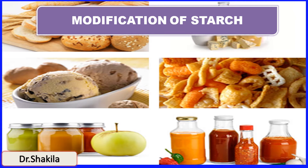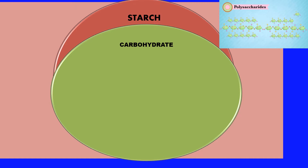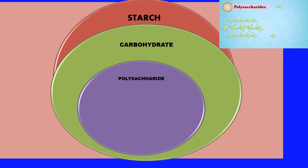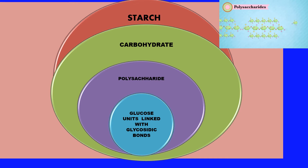Modification of starch is an interesting topic with varied applications in the food industry. Starch is a macromolecule belonging to the group of carbohydrates, which is a macronutrient and a polysaccharide. Starch comprises glucose units linked with glycosidic bonds — these glucose units are linked as a linear chain in amylose and as a branched chain in amylopectin.